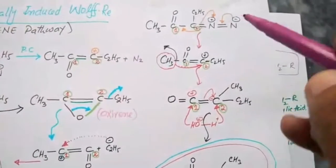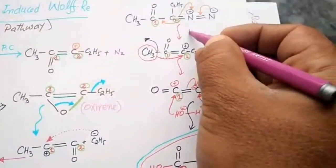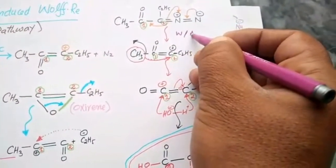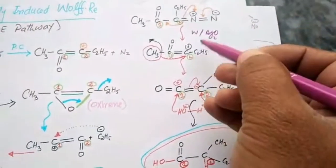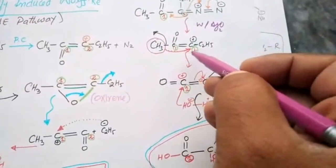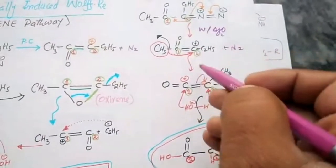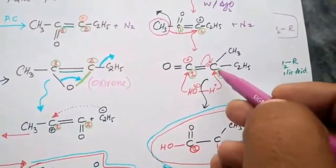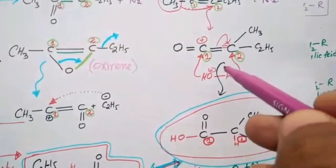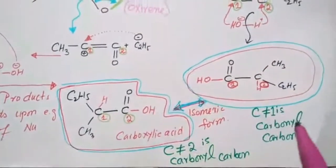Now what is the benefit of this oxirene pathway? Look here, this is the water and silver dioxide pathway. Look here carbon one, carbon two, nitrogen release, rearrangement, ketene formation, then nucleophile.